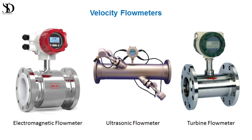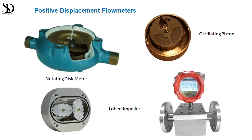2. Velocity flow meters: utilize the velocity of the fluid to determine flow rate. Examples include electromagnetic, ultrasonic, and turbine flow meters. 3. Positive displacement flow meters: these measure fluid flow by repeatedly filling and emptying a chamber of known volume. Piston, gear, and nutating disc meters are common types.